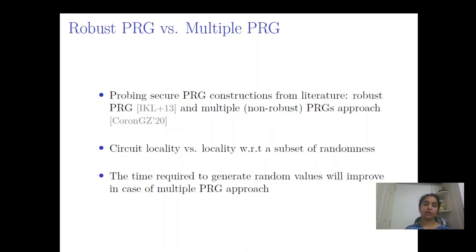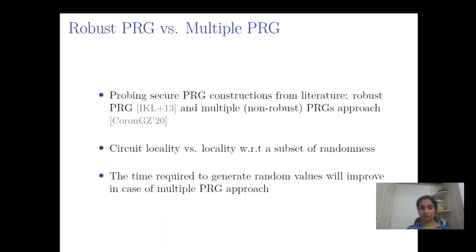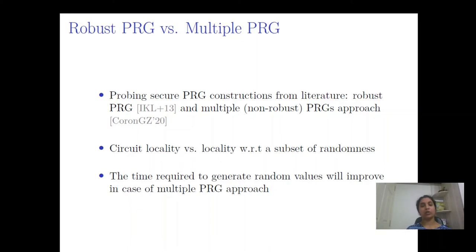The probing-secure PRG constructions from the literature are the robust PRG and the multi-PRG techniques. With robust PRG, the whole circuit is treated as a single entity and locality is computed for the entire circuit. The multi-PRG technique uses multiple non-robust PRGs and divides the randomness into subsets; locality is computed with respect to each subset. We observe better online execution times using the multi-PRG technique, because the time to output one unit of randomness is less compared to robust PRG.